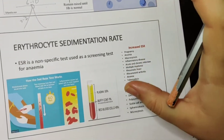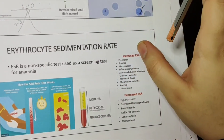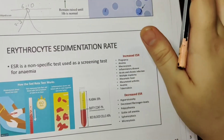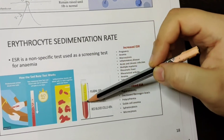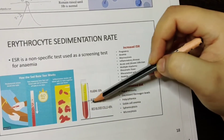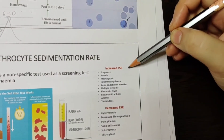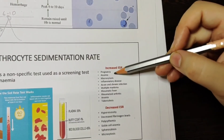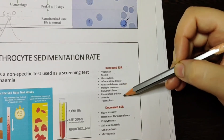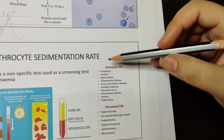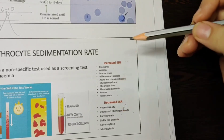Erythrocyte sedimentation rate (ESR) is a very non-specific test — it is not only done for hemoglobin estimation but for many other factors. We take blood, let it set for 60 minutes, after which it separates into plasma, buffy coat, and red blood cells. ESR is increased during pregnancy, anemia, inflammatory disease, rheumatic fever, rheumatoid arthritis, and tuberculosis. It is decreased in sickle cell anemia, spherocytosis, and microcytosis.